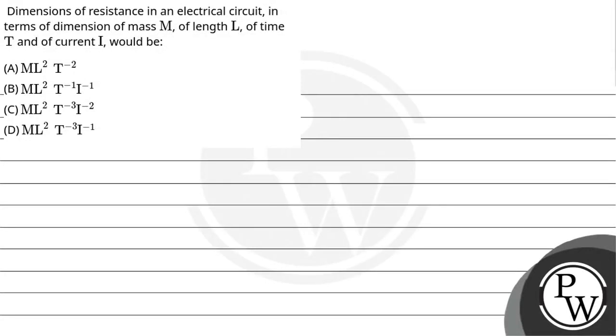Hello, welcome. Let us read the question. We should carry dimensions of resistance in an electrical circuit in terms of dimension of mass, length, time T, and current I. What would it be?